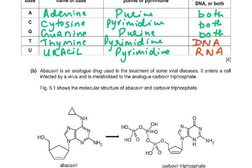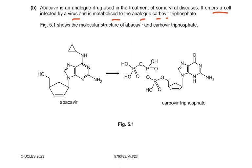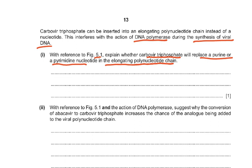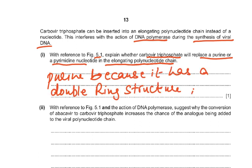Abacavir is an analog drug used in treating some viral diseases. It enters a cell infected by a virus and is metabolized to the analog carbavir triphosphate. Figure 5.1 shows the molecular structures of abacavir and carbavir triphosphate. Carbavir triphosphate can be inserted into an elongating polynucleotide chain instead of a nucleotide, interfering with the action of DNA polymerase during the synthesis of viral DNA. The question asks whether carbavir triphosphate will replace a purine or pyrimidine nucleotide. The answer is a purine, because it has a double ring structure.